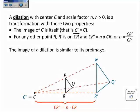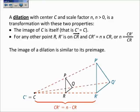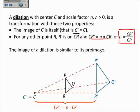The book defines a dilation this way. A dilation with center C and a scale factor of n, where n is greater than zero — we're not looking at negative scale factors — is a transformation with these two properties. One, the image of C is itself, so C' equals C. For any other point, for example R, R' is on ray CR, and CR' is equal to n times CR. Another way of rearranging that: if you divide both sides by CR, you get that n is equal to CR' over CR. We will come back and look at this formula — it will be very useful if you want to find n.